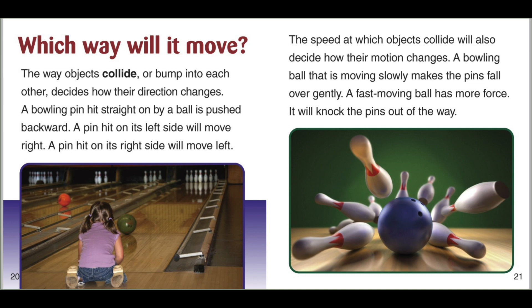A bowling pin hit straight on by a ball is pushed backward. A pin hit on its left side will move right. A pin hit on its right side will move left.